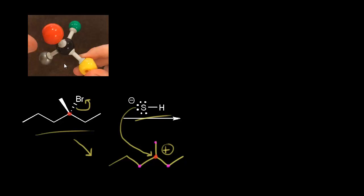At this point, it's really helpful to look at this reaction using the model set. In the video I'm about to show, I make bromine green, so you can see this green bromine. The methyl group coming out at us in space is going to be red. On the right side, this ethyl group will be yellow. And finally, on the left side, this propyl group will be gray.